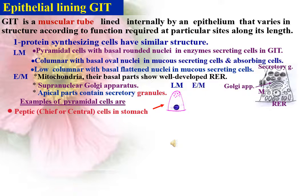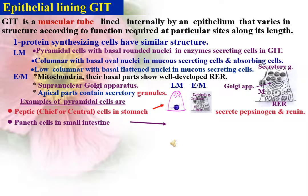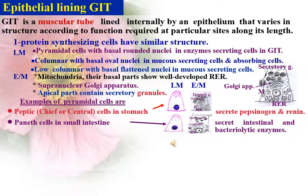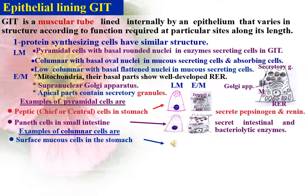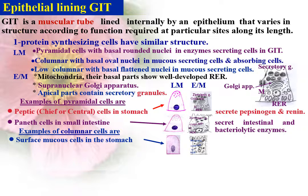Examples of pyramidal cells are peptic chief or central cells in the stomach — they secrete pepsinogen and renin. Paneth cells in the small intestine secrete intestinal enzymes and bacteriolytic enzymes. Examples of columnar cells with basal oval nuclei are surface mucous cells in the stomach; they secrete neutral mucus which protects against HCl in the gastric lumen and lubricates the surface of the stomach.